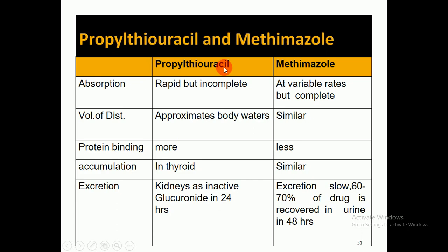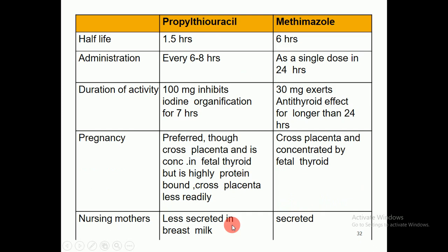Regarding protein binding: propylthiouracil is highly protein-bound, while methimazole is less so. Both accumulate in the thyroid similarly. Propylthiouracil is excreted through the kidneys as an inactive glucuronide within 24 hours, while methimazole excretion is slower — 60 to 70 percent of the drug is recovered in urine in 48 hours.